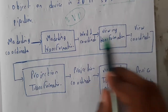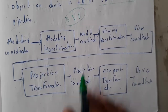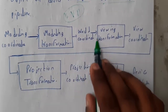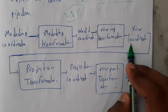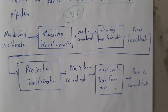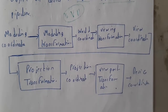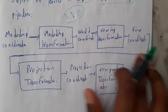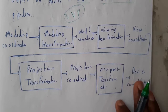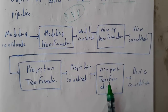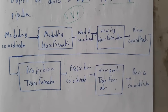We have a total of five frames. The first frame contains modeling coordinates, which are converted into world coordinates. Then world coordinates are converted into view coordinates, after that projection coordinates, and finally device coordinates. The transformations involved are modeling, viewing, projection, and viewport transformations.